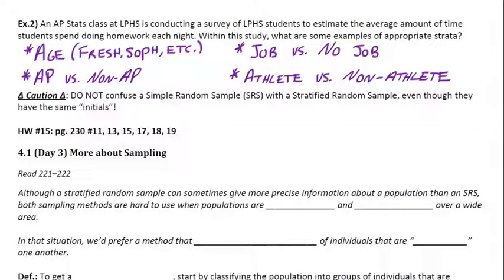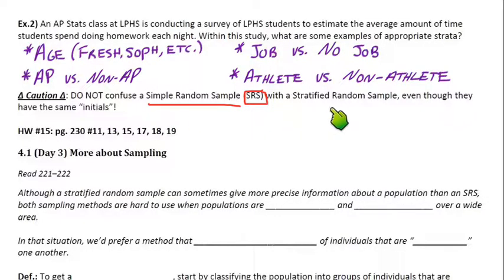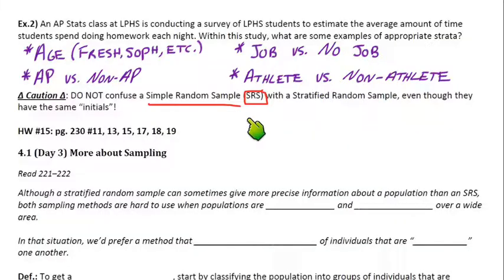One last caution: do not confuse simple random sample — the SRS — with the stratified random sample. Even though they could share the same acronym, they are different. Simple random sample is the basic overall one — that's the one that gets the initials SRS. Stratified random sample is the more specific one where we create groups and do an SRS within each group. That one is more advanced than just an SRS, so keep those terms straight — there's a lot of vocabulary in this chapter.